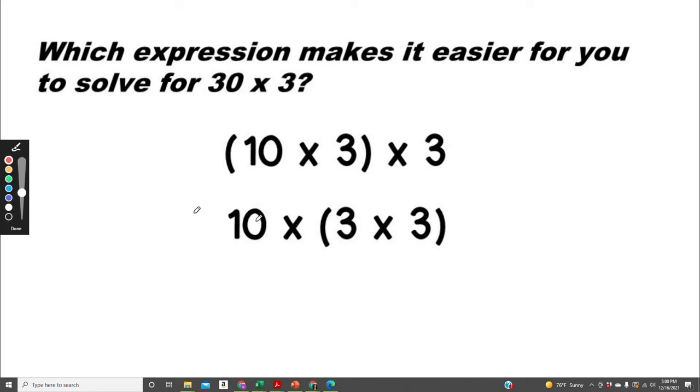Let's see what that would look like. So for the first one we would say 10 times 3 equals 30. 30 times 3 would require me to multiply 30 times 3, or I could do a repeated addition.